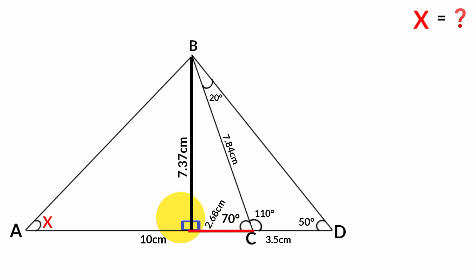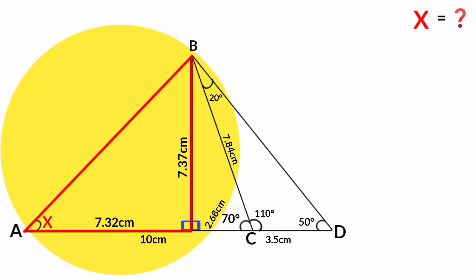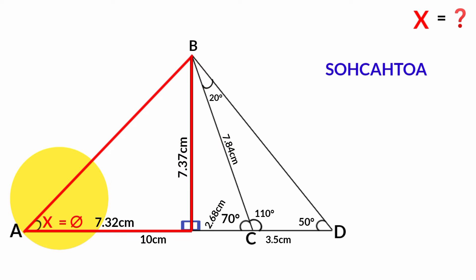...this remaining length must be 10 centimeters minus 2.68 centimeters, which is 7.32 centimeters. Now from this triangle, we can also use SOH-CAH-TOA to find x. Taking x as theta, there is the opposite and there is the adjacent.